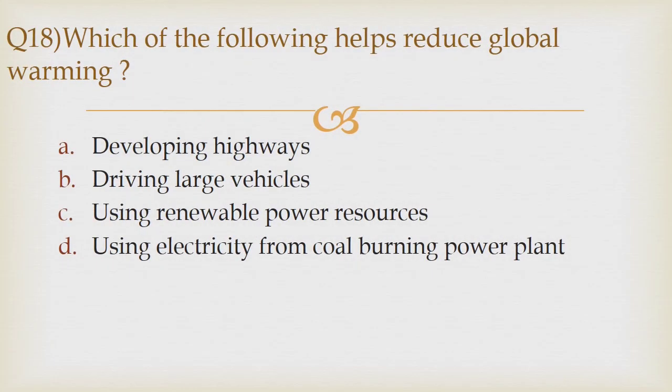Question number 18. Which of the following helps reduce global warming? Option A: Developing highways. Option B: Driving large vehicles. Option C: Using renewable power resources. Option D: Using electricity from coal-burning power plant. The correct answer is option C: Using renewable power resources.